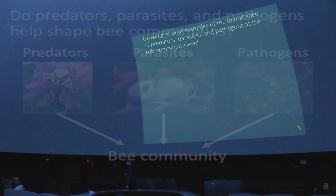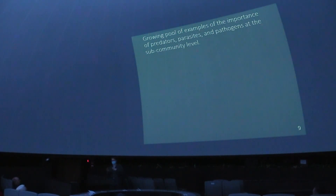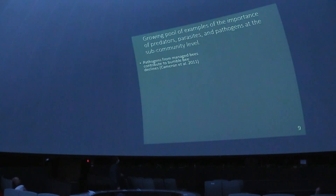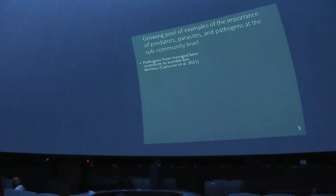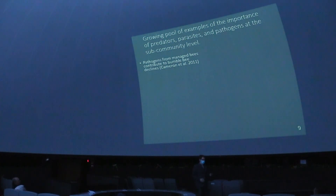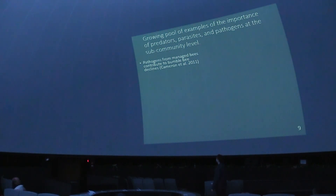I was interested at the community level — what species are there and in what quantities — but there has been other work at a sub-community level looking at single species or groups of species. One of the big findings, done by Sydney Cameron's group at the U of I, is that bumblebee declines are the result of pathogens from managed species — honeybees as well as managed bumblebees. Those pathogens get out into the native groups, make them sick, and cause declines.